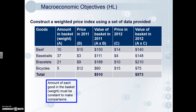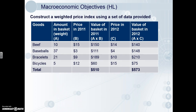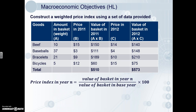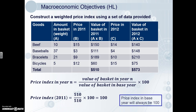For this exercise we'll use 2011 as our base year. Every index needs a base year so that comparisons can be made. We'll construct the weighted price index for 2011. The equation is: the price index in year N equals the value of the basket in year N over the value of the basket in the base year, times 100. Plugging in the numbers: 510 over 510 times 100 equals 100. The price index for the base year will always equal 100, because that's the base we work from.